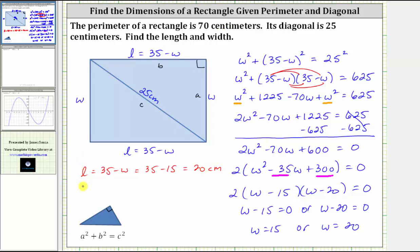And the width, which is equal to W, is 15, and of course, this is centimeters. Now I want to show what happens if we use W equals 20. If we use W equals 20, we would have the length is equal to 35 minus 20, which is equal to 15 centimeters. And the width, if we're using W equals 20, is 20 centimeters. But typically, the length is the longer side, and the width is the shorter side. And therefore, we will say the length is 20 centimeters, and the width is 15 centimeters.